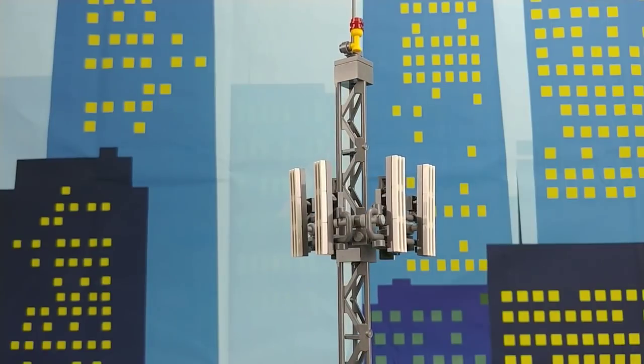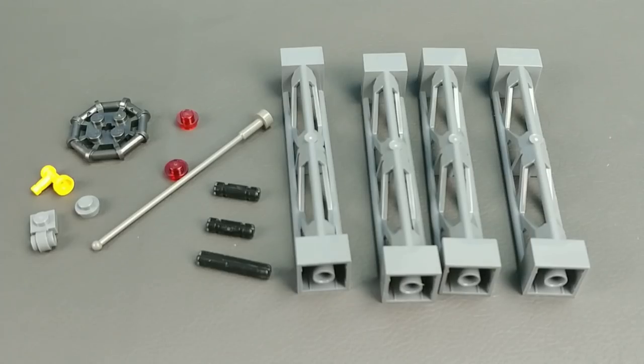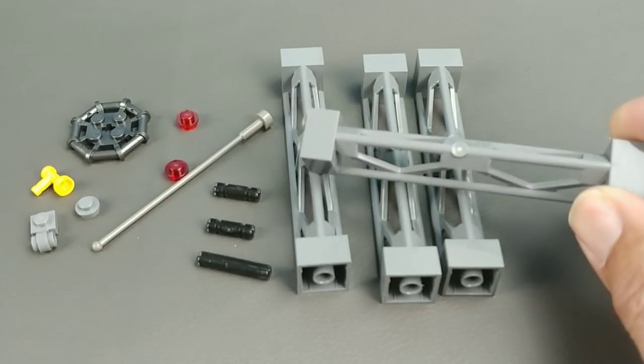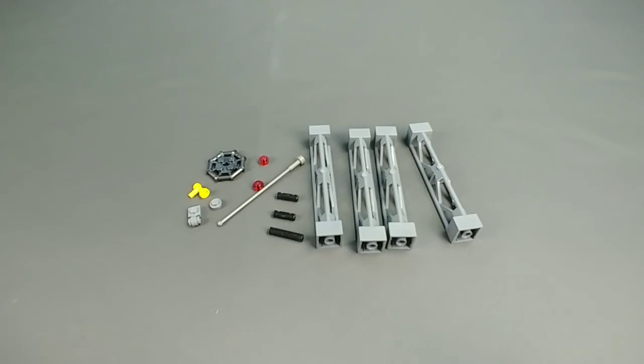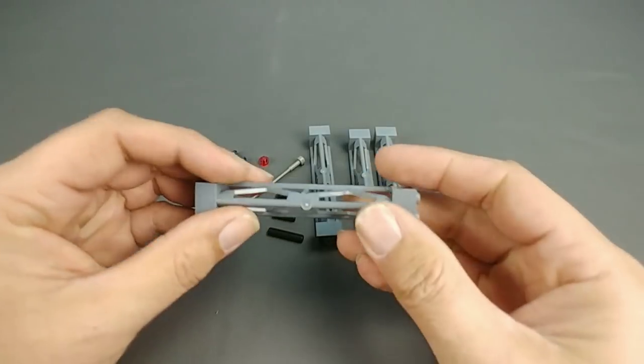Now the first thing we're going to start with is the main pole structure. This is a list of all the pieces you will need. I'm going to call it a list but this is the image of all the pieces that you're going to need and it's quite simple.